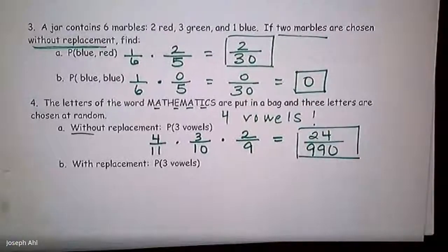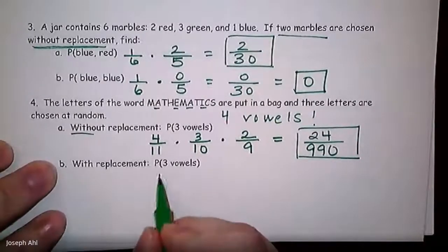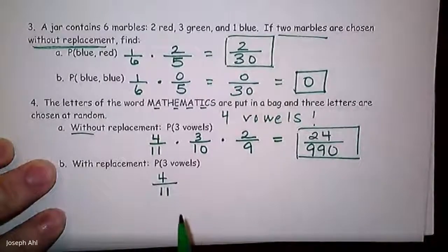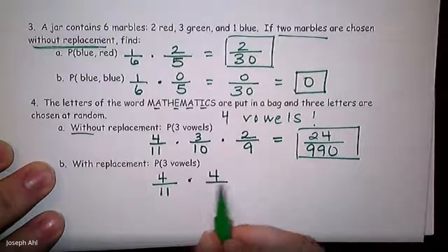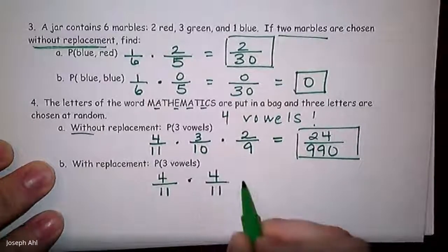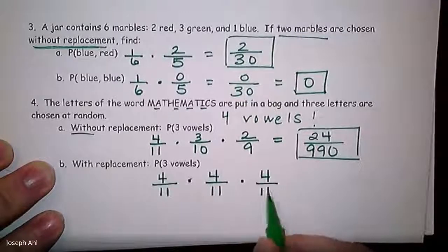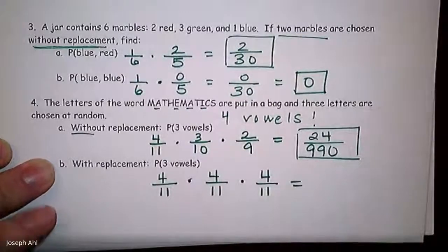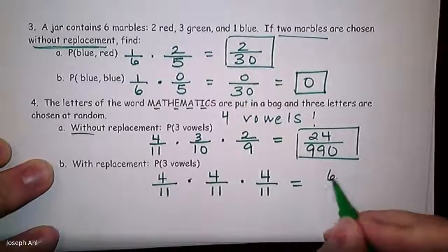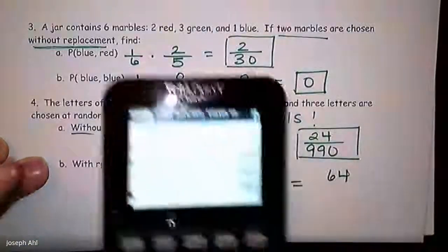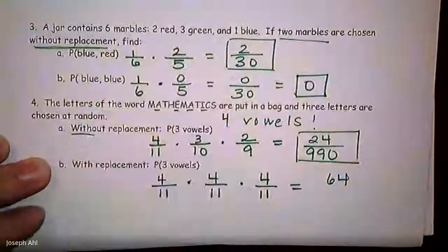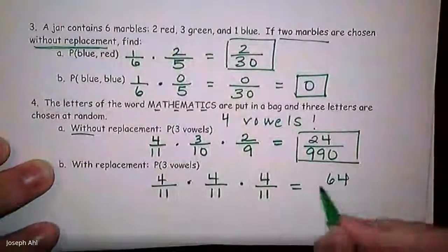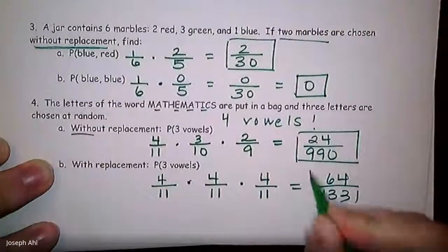With replacement: the first time I choose a vowel it's four out of 11. Since I put that vowel back, the second time it's still four out of 11, and the third time still four out of 11. Four times four times four is 64 on top, and 11 cubed — 11 times 11 times 11 — is 1,331. So the final answer is 64 over 1,331.